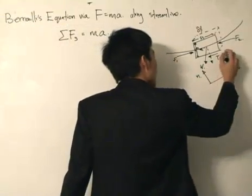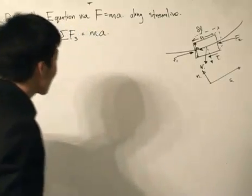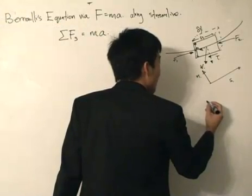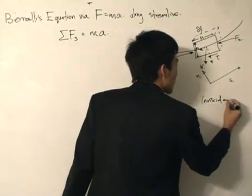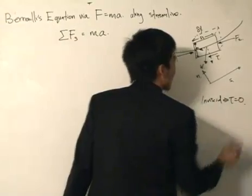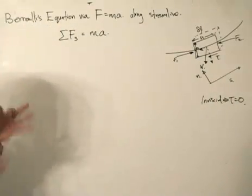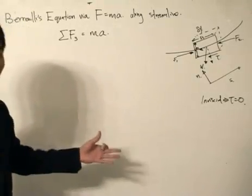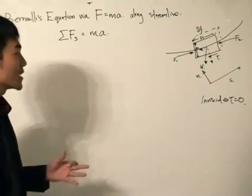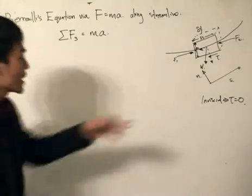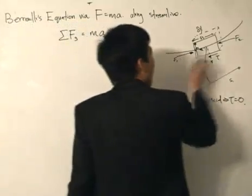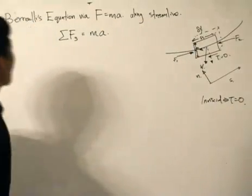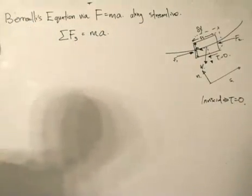There is also the shearing stress given by tau. For today's analysis, we introduce the condition that the liquid is inviscid, which implies that tau equals zero. This categorizes our analysis to an inviscid liquid. If the body were to move as a rigid body, there is no shearing stress between layers, so we let tau equal zero. That leaves us with the weight, F1, and F2.